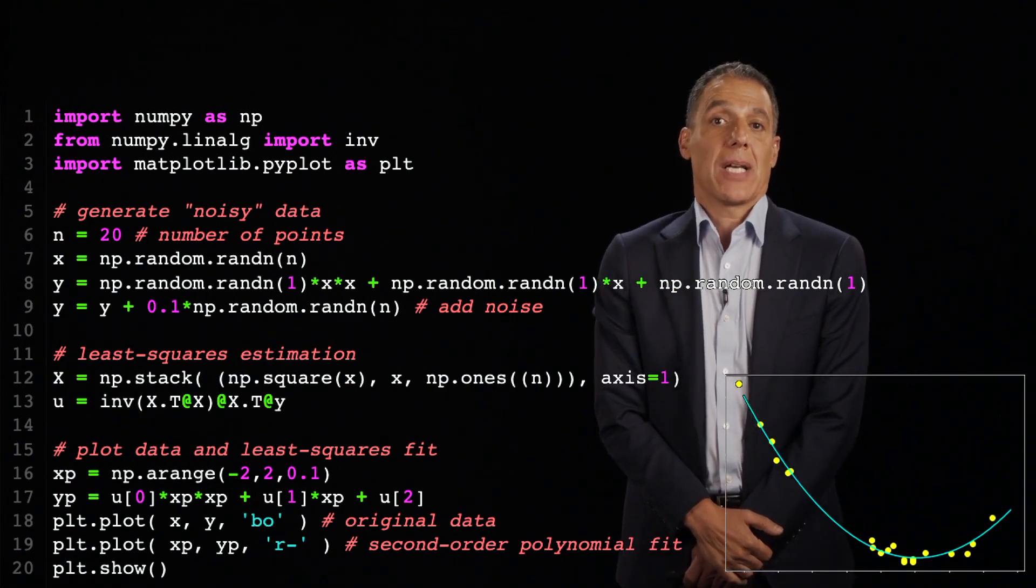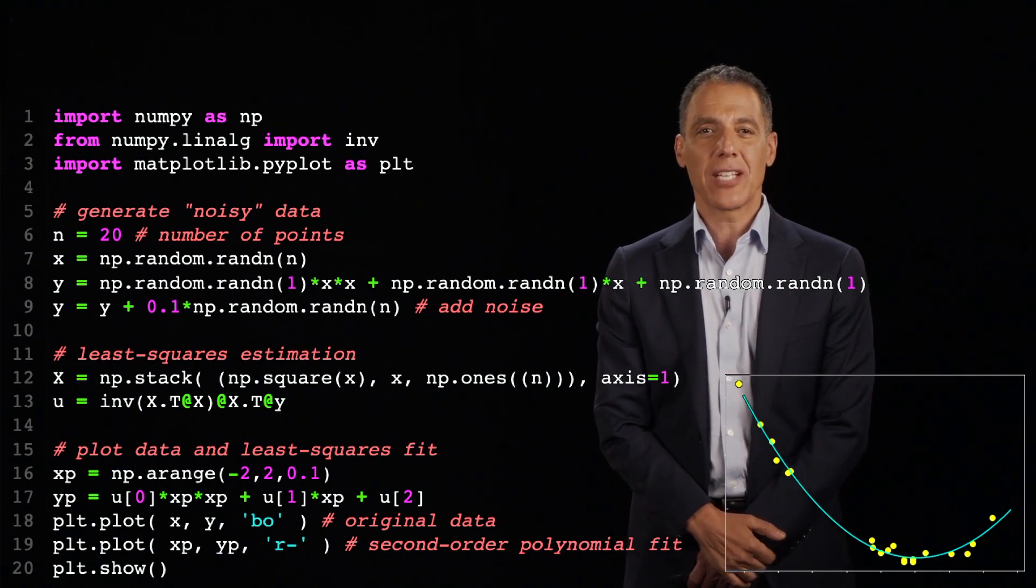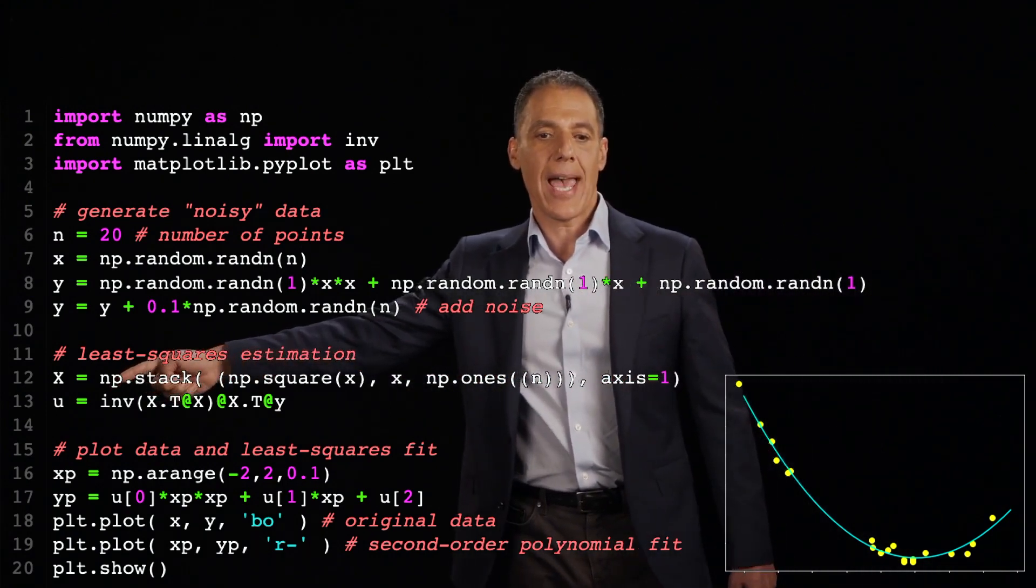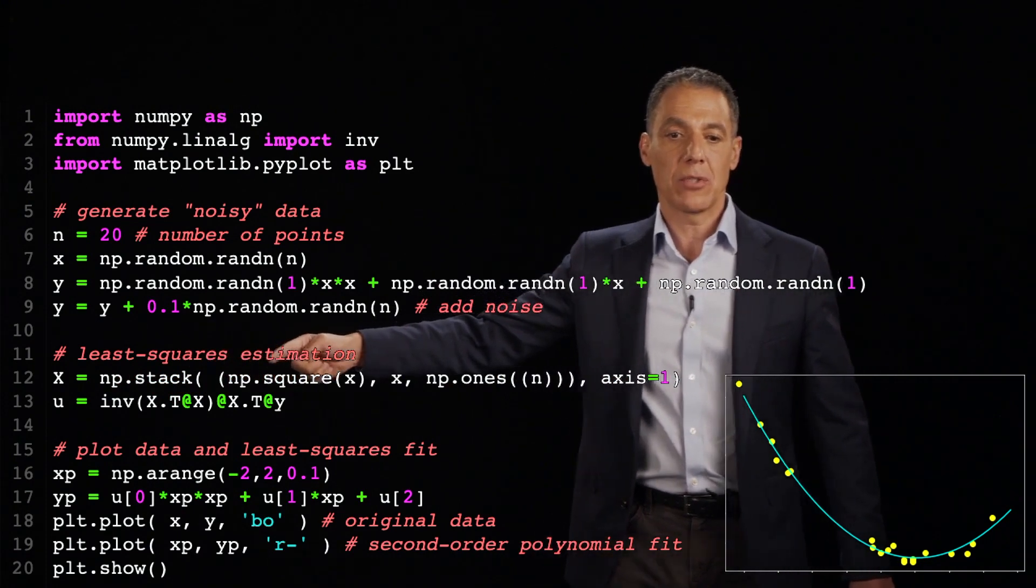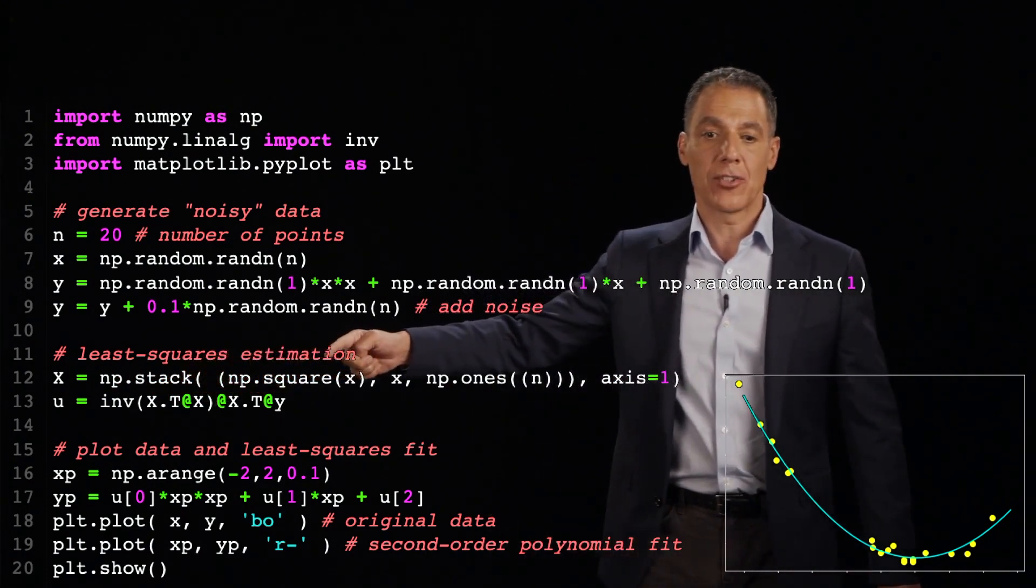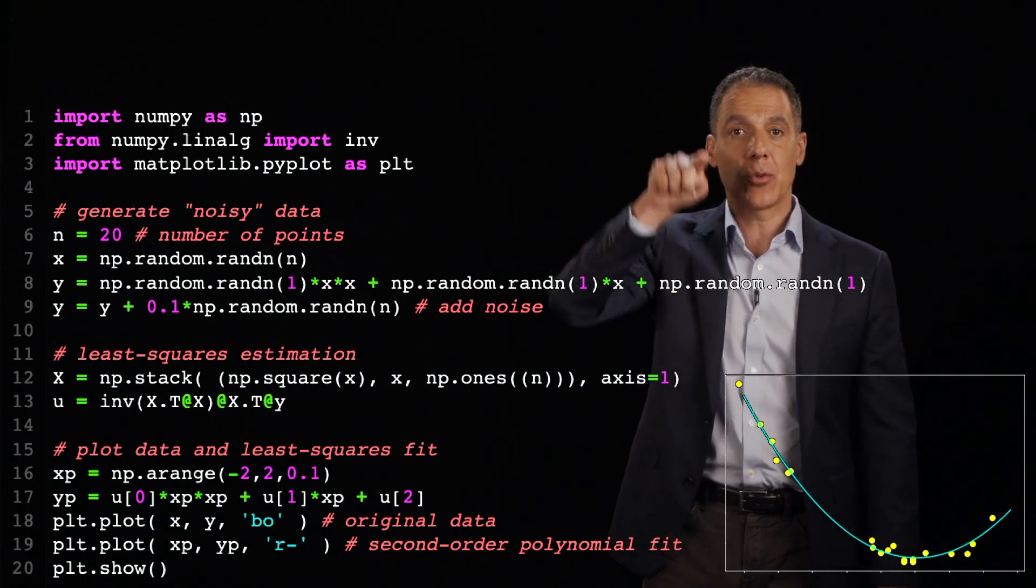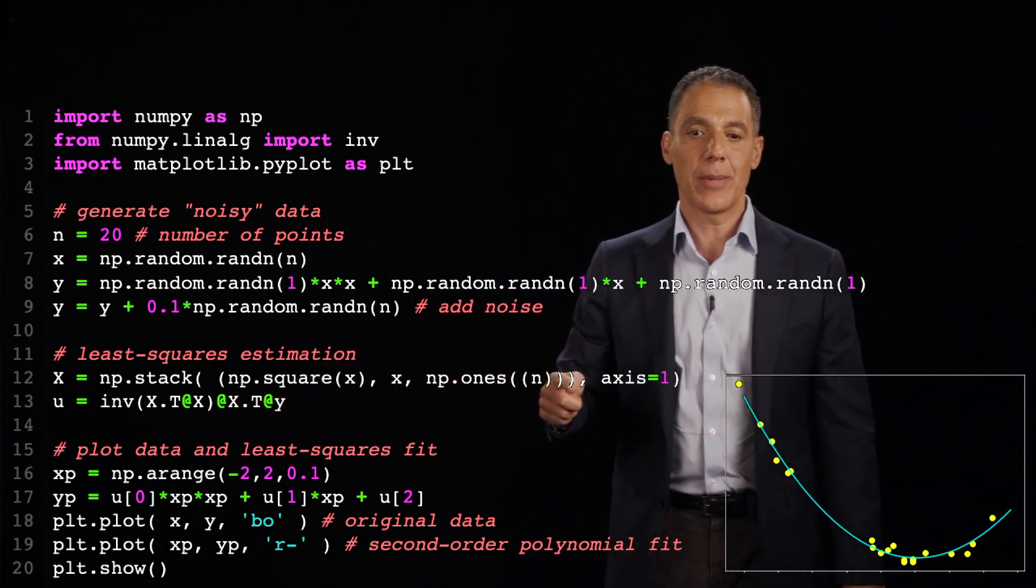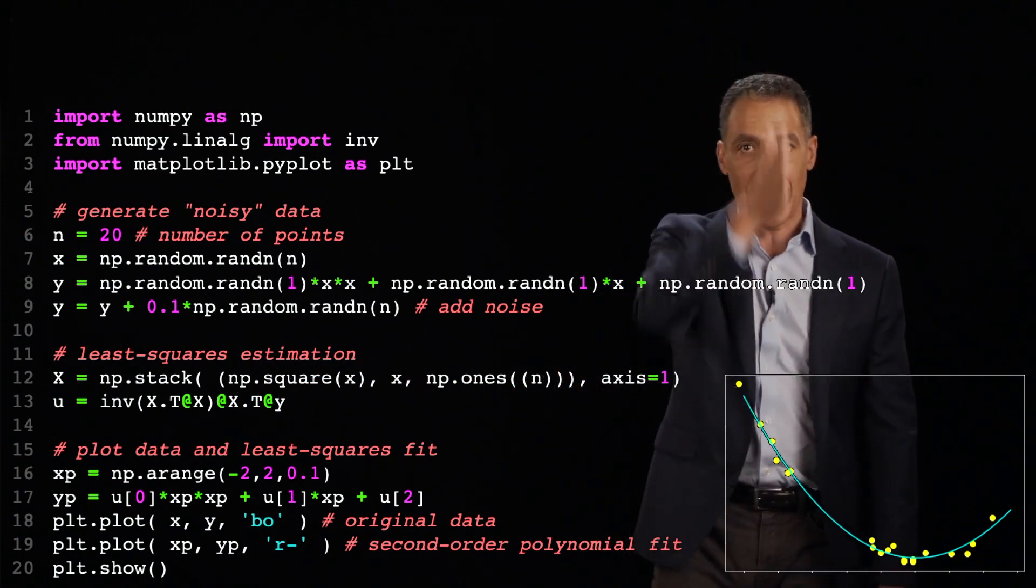All right. As promised, the two lines of code, it may have taken a little bit more depending on how you built these matrices. So I'm going to build my matrix X. I'm going to stack the square of all the X coordinates, X one squared, X two squared up to X n squared. X, those are, that's a linear term. And then a bunch of ones.